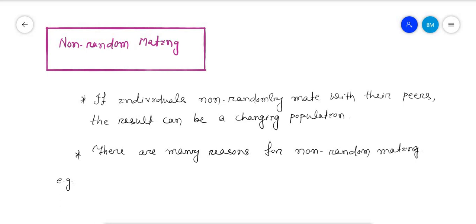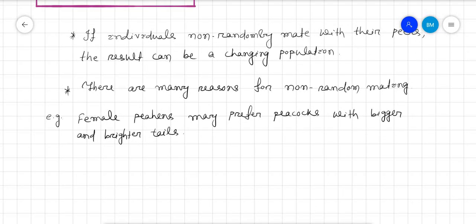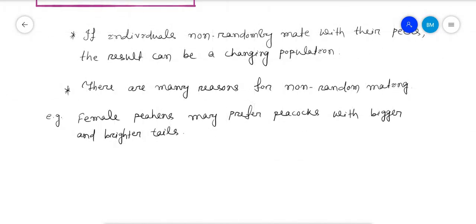Female peahens may prefer peacocks with bigger and brighter tails. This is due to and depends mostly on the morphology, which is eye-catching and seems to be better fit for good offspring.